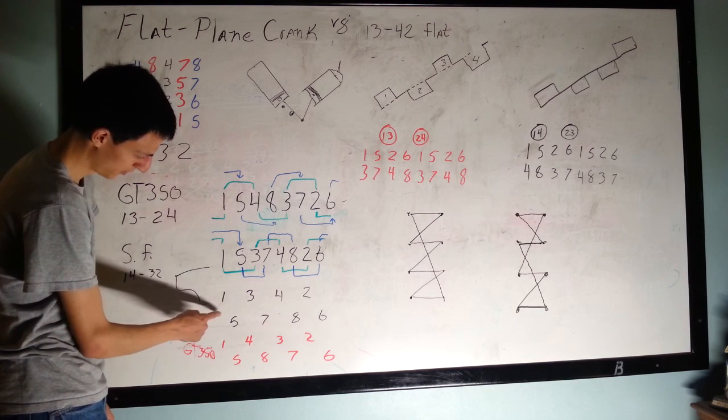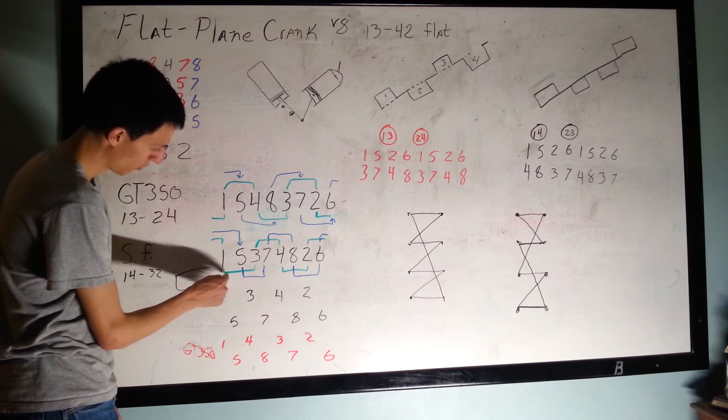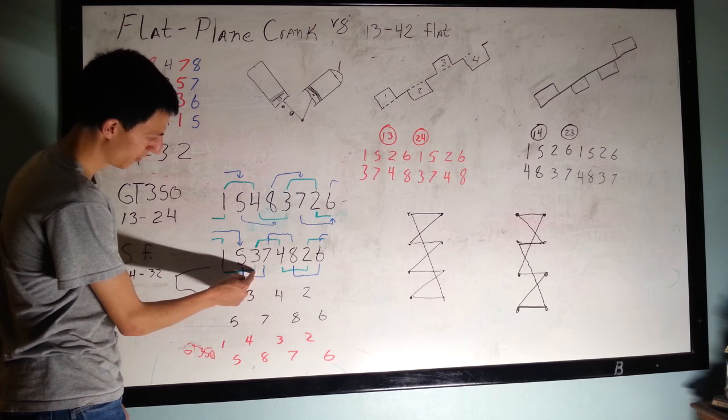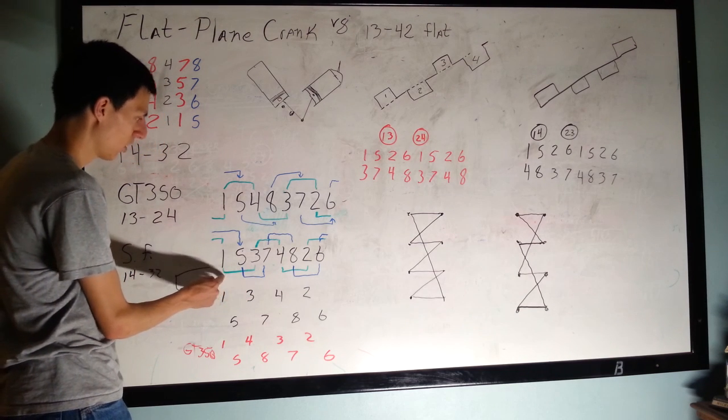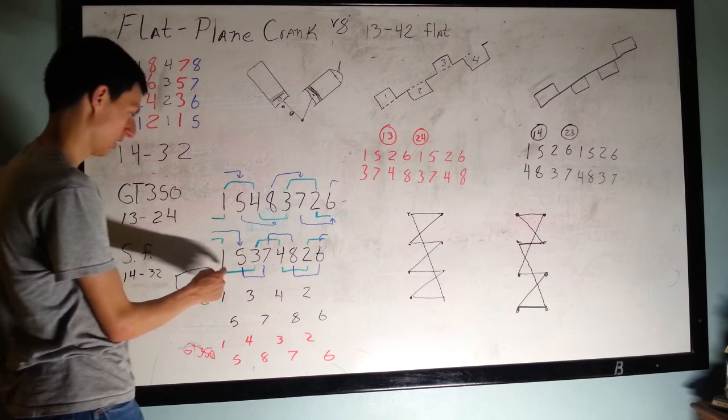So, if you have 180 degrees between 1 and 3, that means you have 360 degrees between 1 and 2.